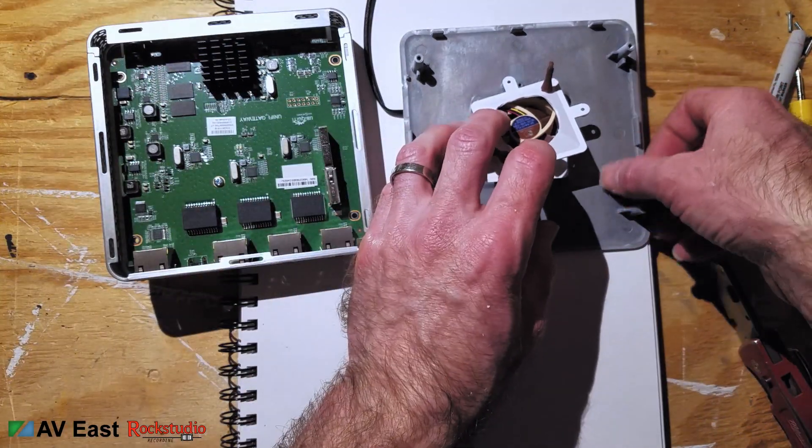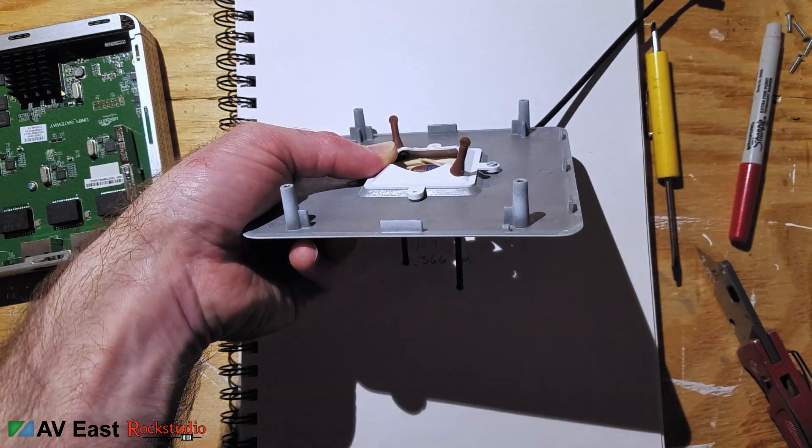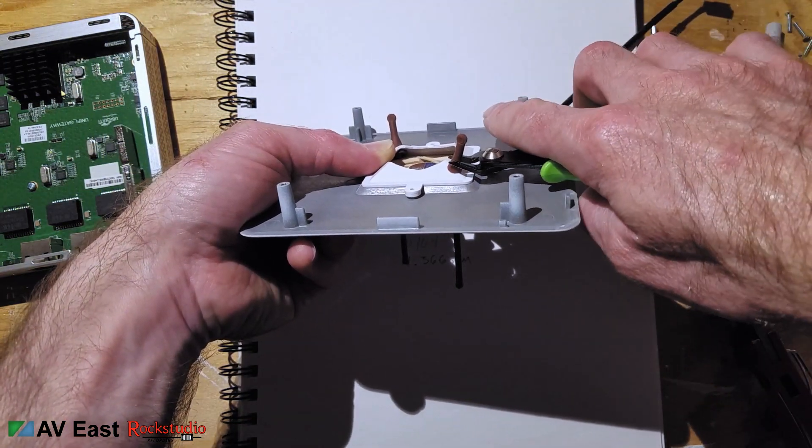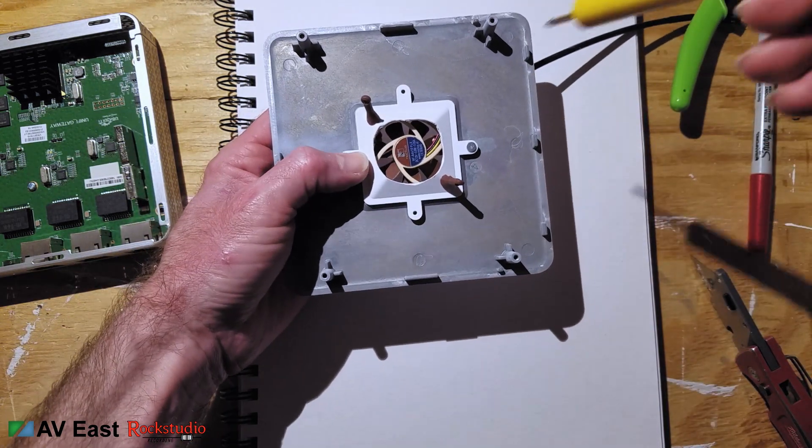You'll see I eventually write the word front and an arrow on the inside of that cover plate of the USG just so I don't lose track of what I'm doing. You can trim off the excess rubber at this point and screw everything back together.